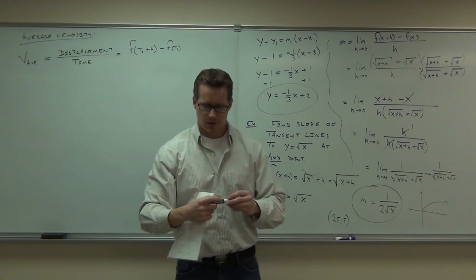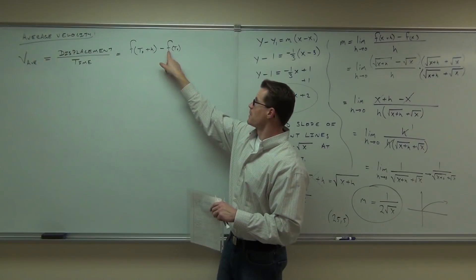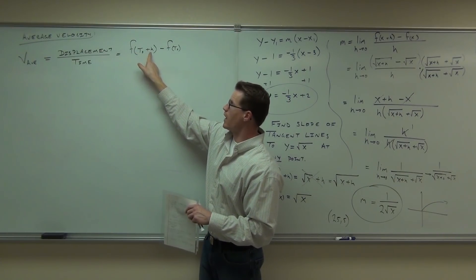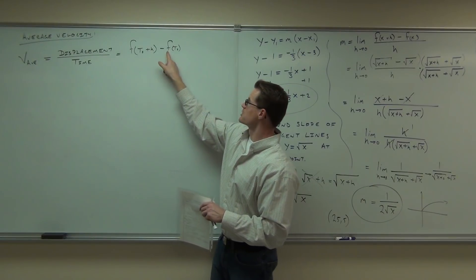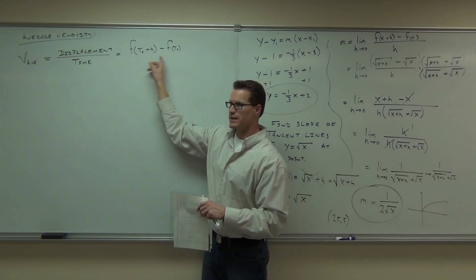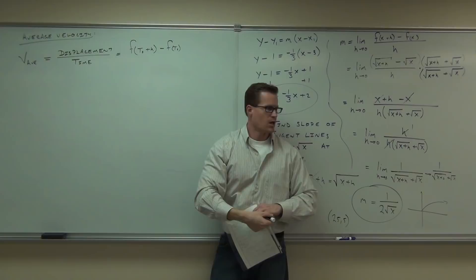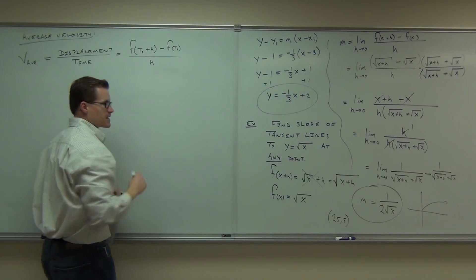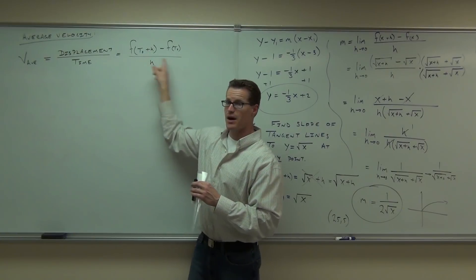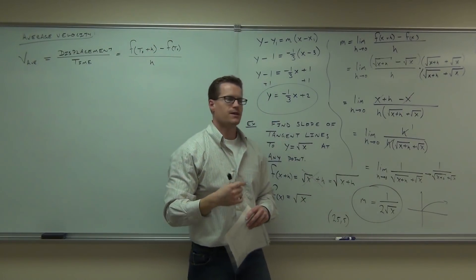f gives you your position. f(t₀) is the position when you started. f(t₀ + h) is the position after a little while — that's the plus h. Position when you end minus position when you started gives you your overall displacement. If we divide that by the time it took you to change — that's h — we get displacement over time. That's what gives you average velocity.